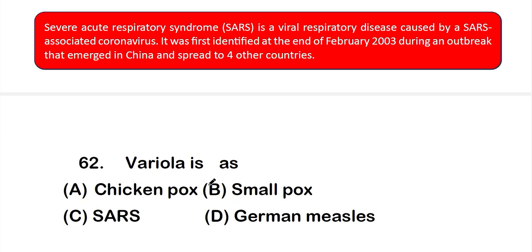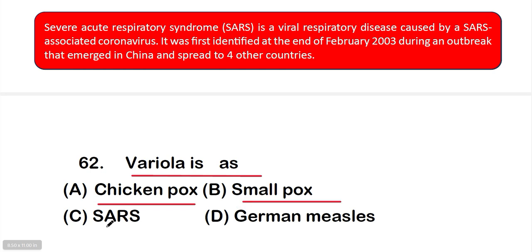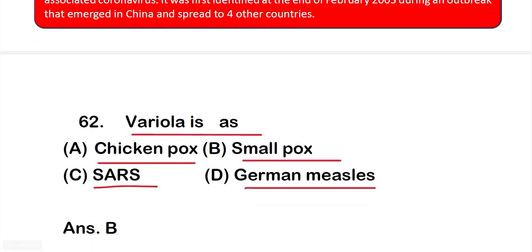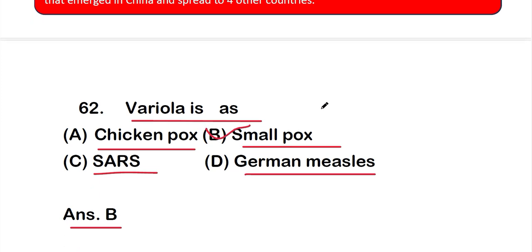Question number 62: Variola is — option A: chickenpox, option B: smallpox, option C: zoster, or option D: German measles. Variola is the causative agent of option B, smallpox.